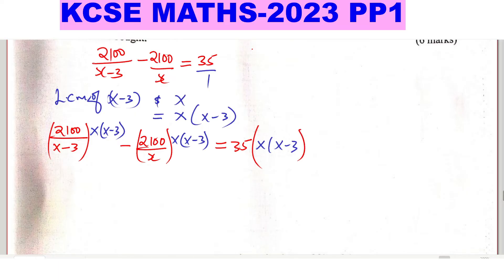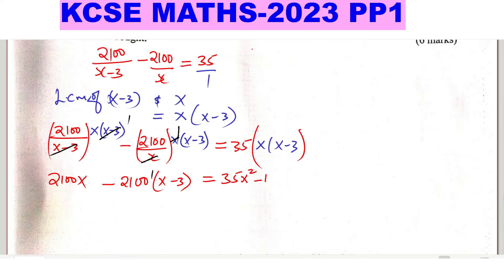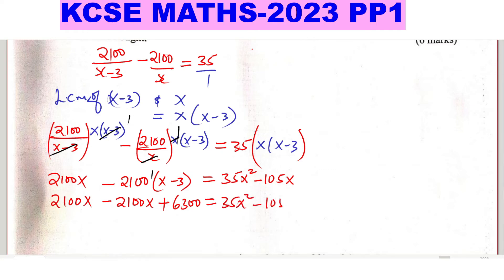After cancelling, the left side gives 2100X minus 2100(X minus 3), which expands to 2100X minus 2100X plus 6300, simplifying to 6300. The right side gives 35X² minus 105X. Since 2100X minus 2100X cancels out, we are left with 6300 equals 35X² minus 105X. Rearranging: 35X² minus 105X minus 6300 equals zero.